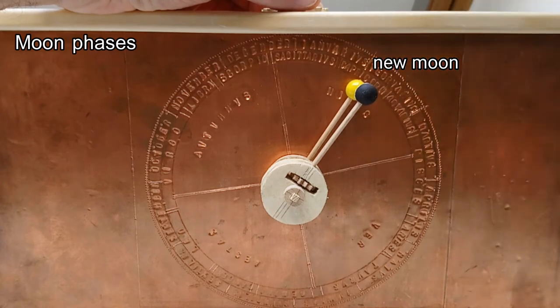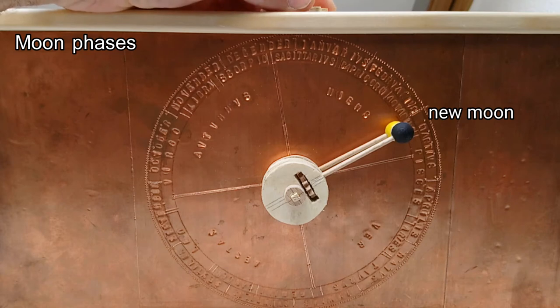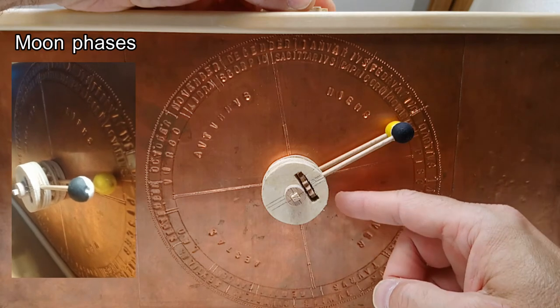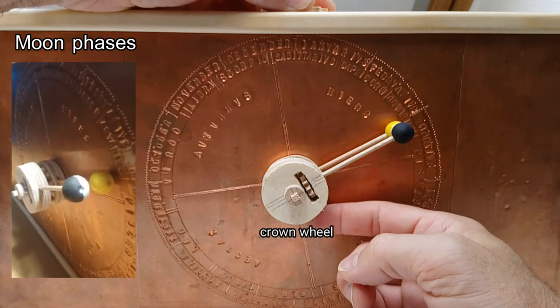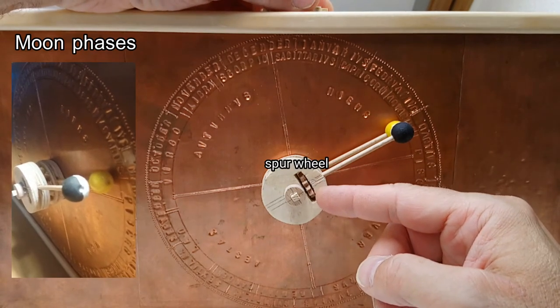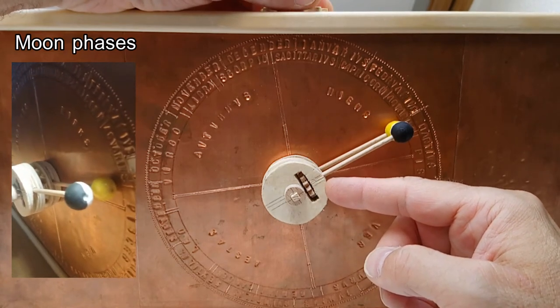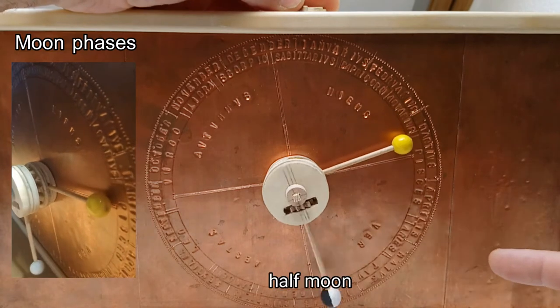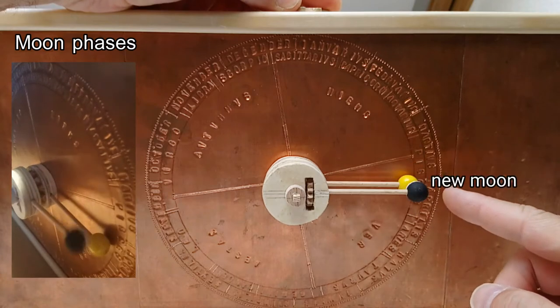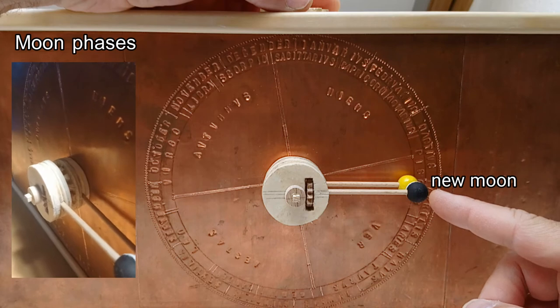For the moon phases we need only two gears. They are attached to the solar and lunar pointers. On the holder for the solar pointer there is a crown wheel and the lunar pointer is mounted on a gear wheel which has the same number of teeth as the crown wheel and runs in it. Therefore with each rotation of the lunar pointer following the solar pointer the moon axis rotates exactly once around itself indicating all the phases of the moon one after the other. So this is quite simple.